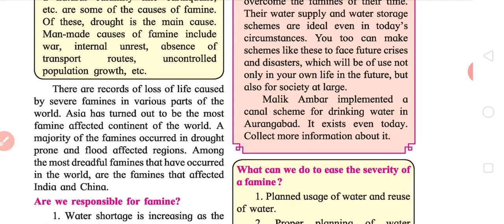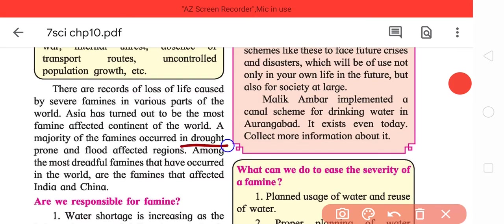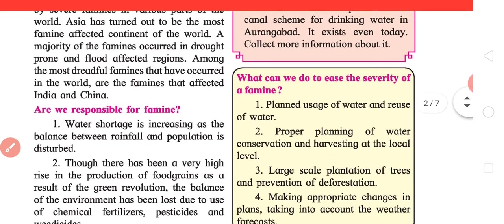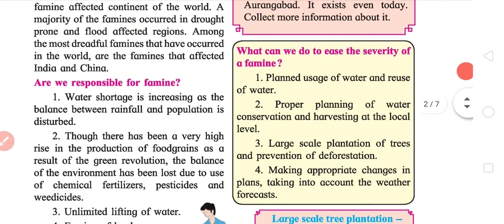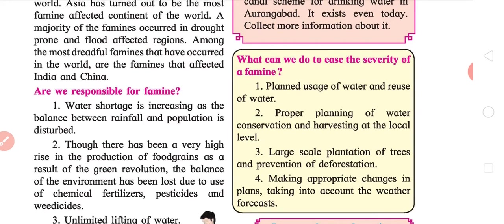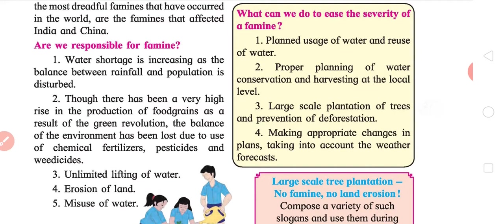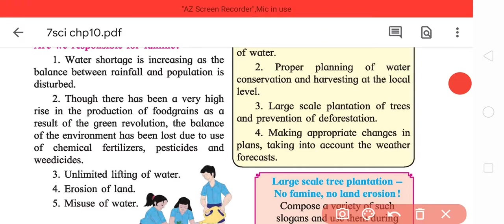Now coming back to point, there are records of loss of life caused by severe famine in parts across the world. Naturally, since Asia has the biggest area, it has the larger species of droughts. The majority of famines occurred in drought prone and flood affected areas. Famines affected India and China. China is one of the countries that had suffered the worst famines in history.